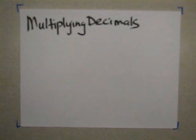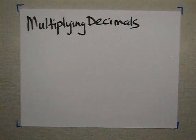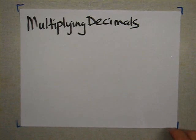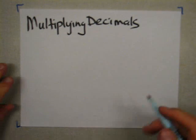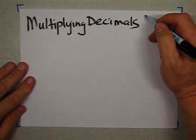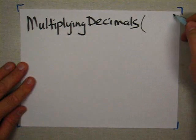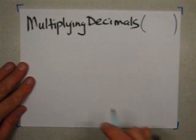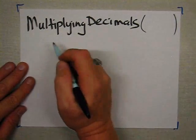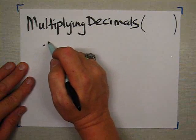Hello, today's topic is on multiplying decimals. You need to know how to do that. We've already probably added and subtracted them, but today it's something a little bit new, so we're going to learn how to multiply them. I'm going to put a big parentheses out here because I want to put something in there in just a moment. Here's our first problem to look at.